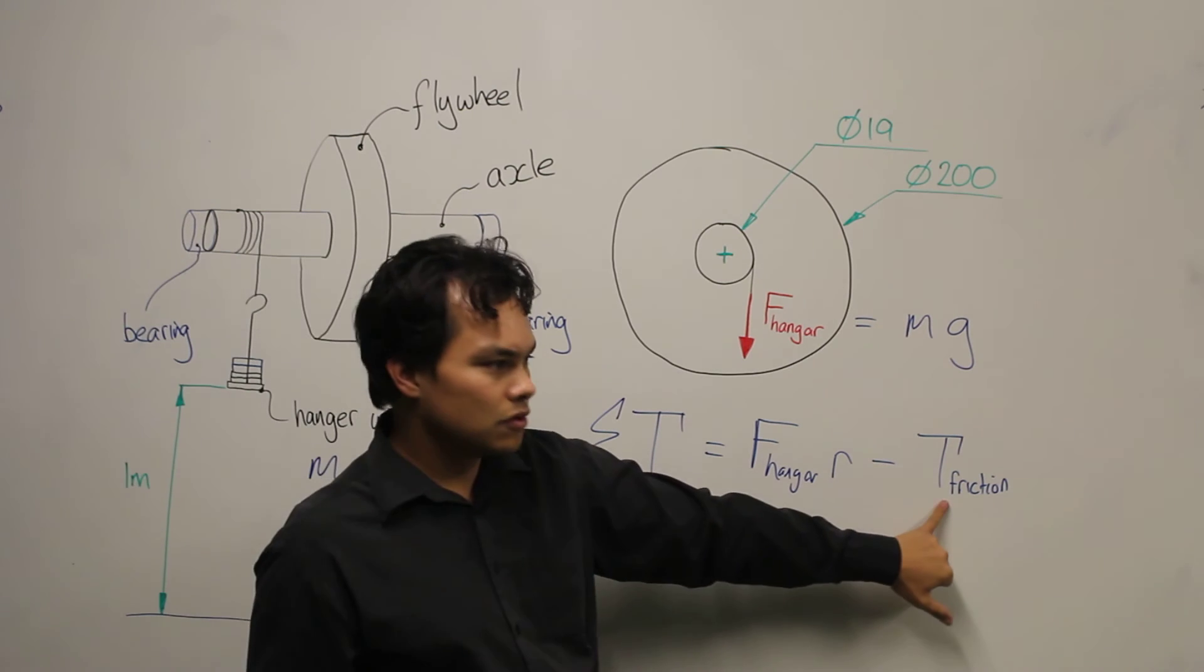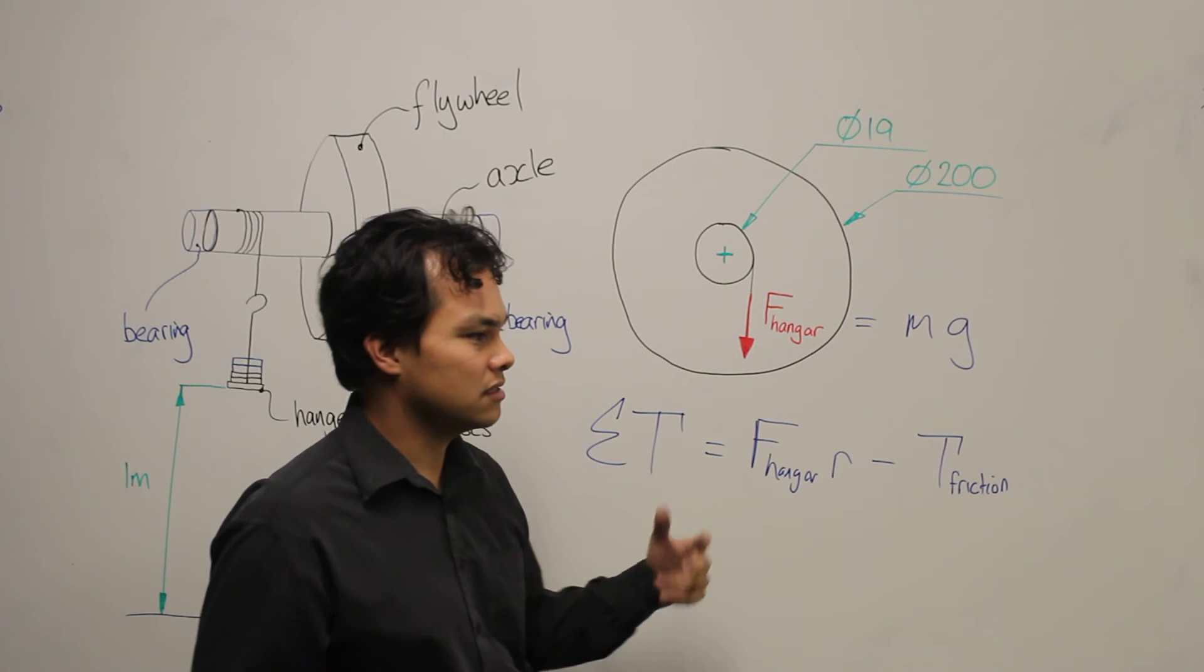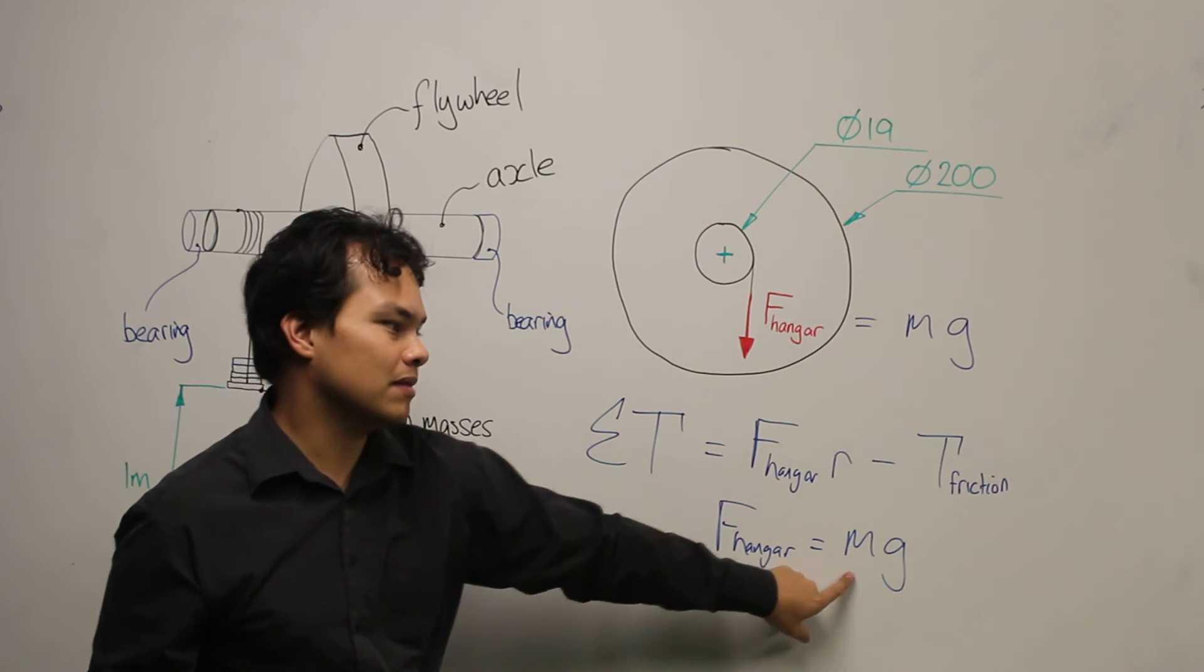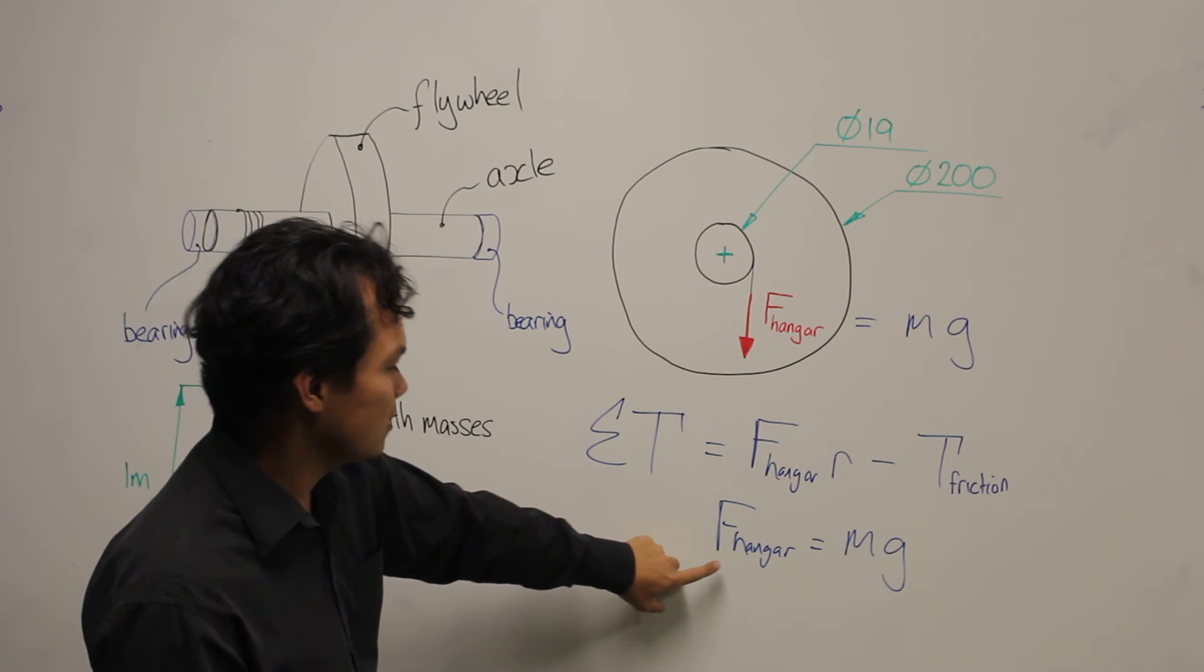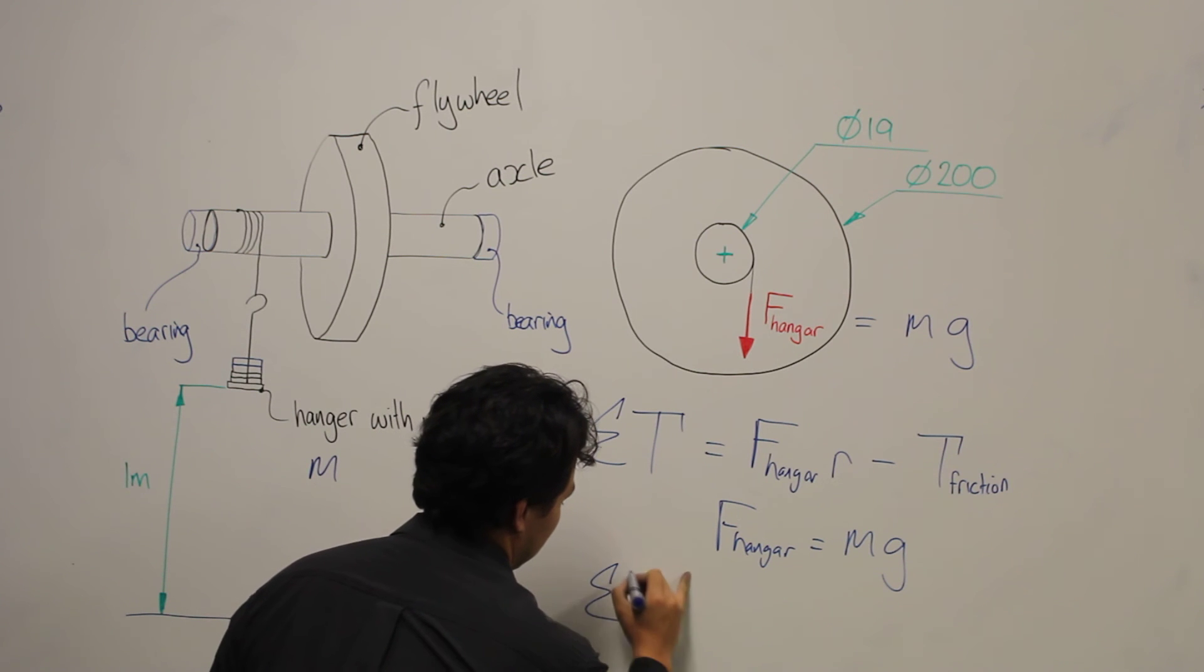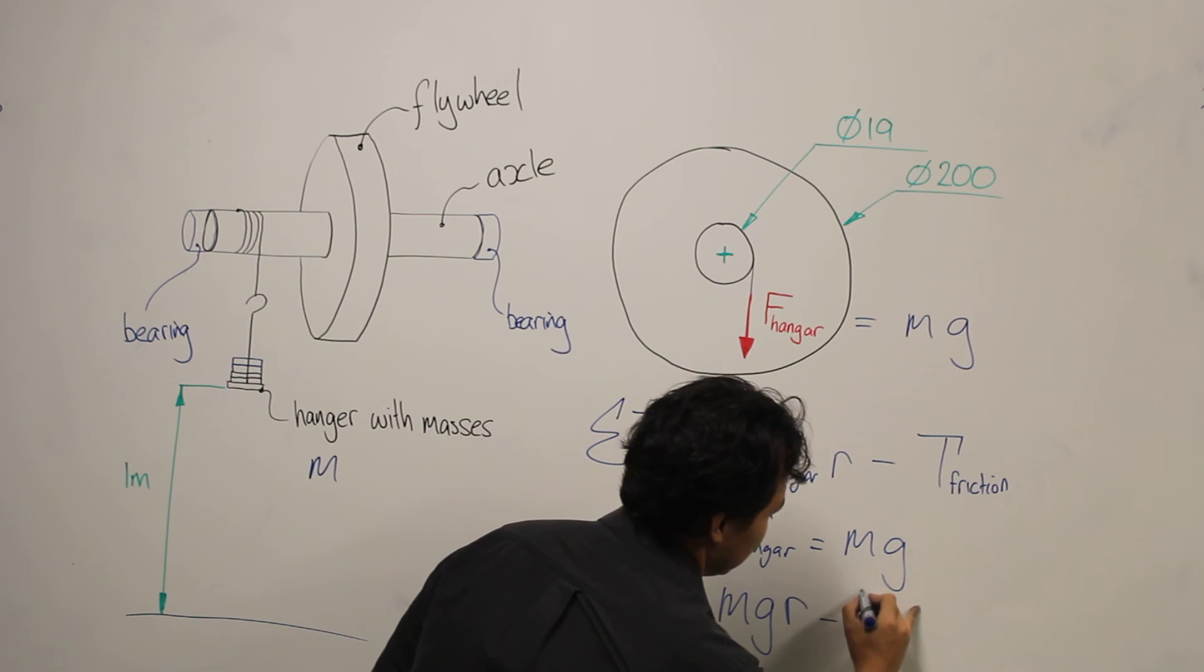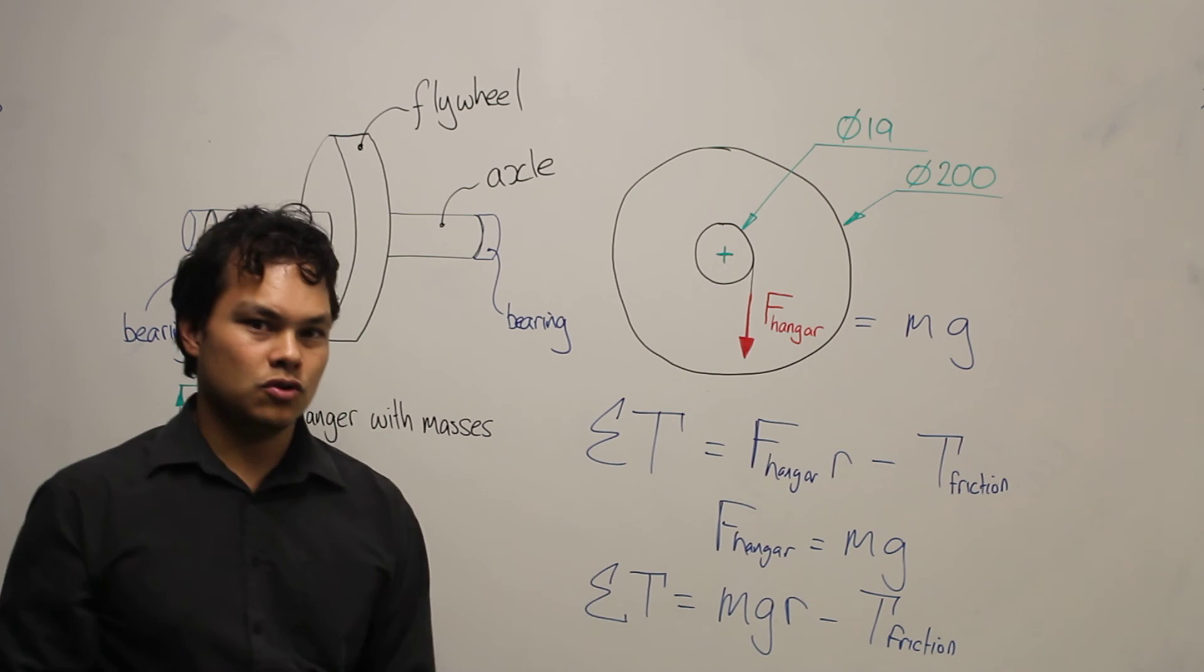The frictional torque was found in the first experiment. The force on the hanger is roughly equal to mass times gravity, where m is the mass placed on the hanger. We can then substitute this into our equation, and we get torque equal to mass times gravity times the radial distance minus the torque due to friction.